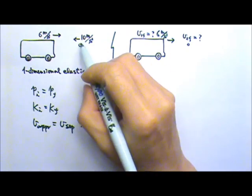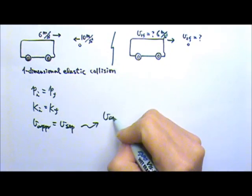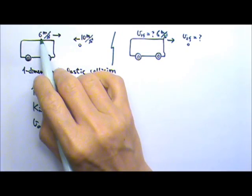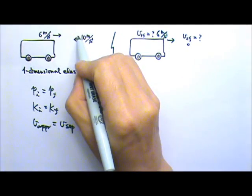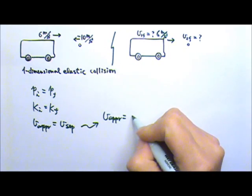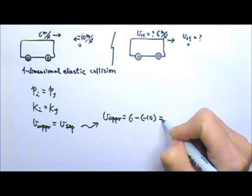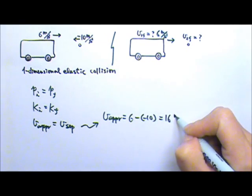So let's see the approaching speed. What is the approaching speed? It's the velocity is 6 and negative 10. So the velocity difference is 6 minus negative 10, so it's 16 meters per second.